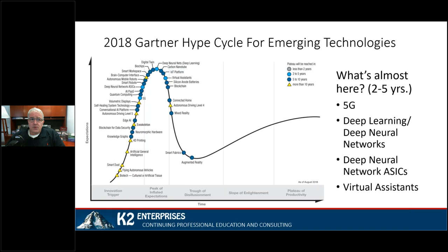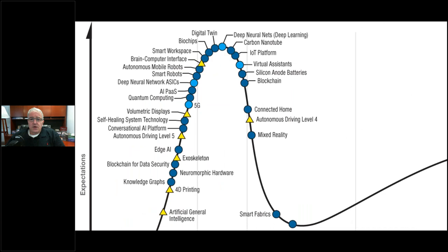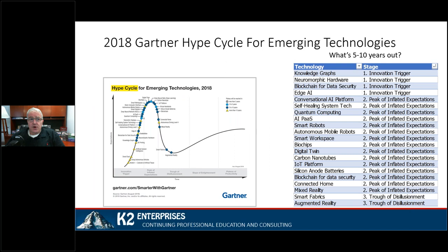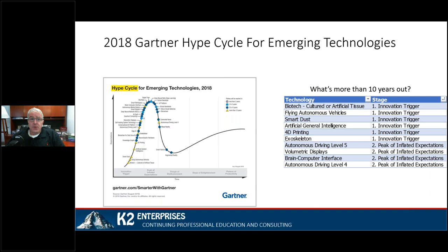This is the Gartner hype cycle for emerging technologies. I want to zoom in because there's nothing here they say is emerging that will be achieved in the next two years — most things are two to five years out. You may be looking at 5G, deep learning, deep neural networks, application-specific integrated circuits for deep neural networks, and virtual assistants. Many are five to ten years out. We also see augmented reality, blockchain, quantum computing, and smart robots in the pipeline.